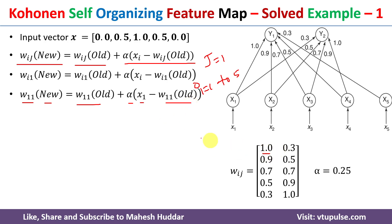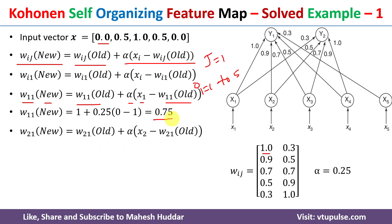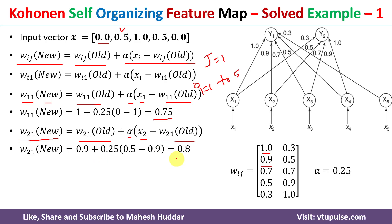W_11(old) is 1.0, alpha is 0.25, and X1 is 0, so: W_11(new) = 1.0 + 0.25 × (0 − 1.0) = 0.75. Similarly, W_21(new) = W_21(old) + 0.25 × (X2 − W_21(old)): W_21(old)=0.9, X2=0.5, giving W_21(new) = 0.8.